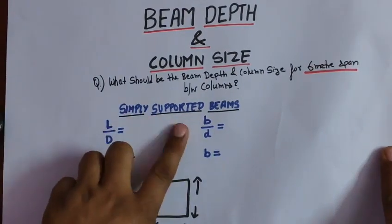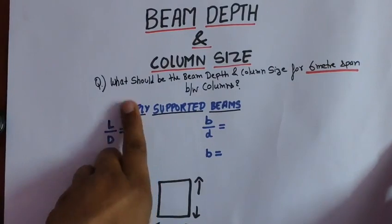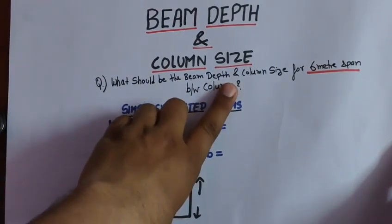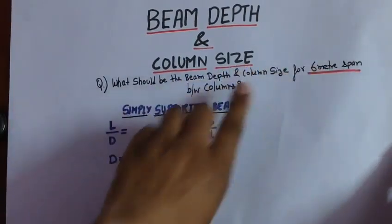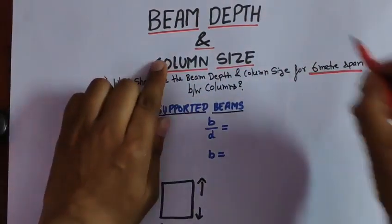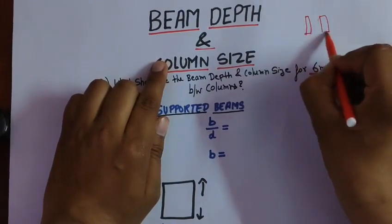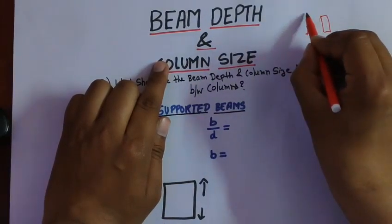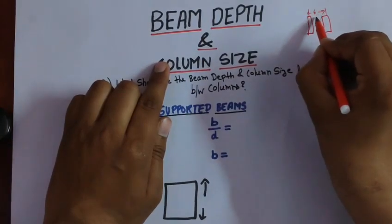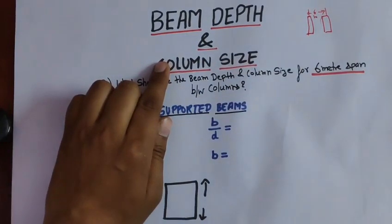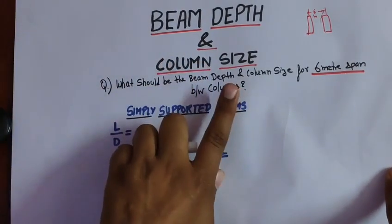We are taking the simply supported beam. Our question is: what should be the beam depth and column size for a 6 meter span? For example, if we have a column here and two columns with their center to center spacing of 6 meters, what will be the beam depth and their column size?